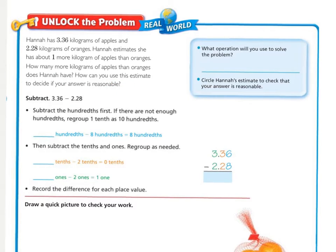Press pause and squiggle underline what you are being asked to find. Circle the important numbers and then underline any clue words that tell you what operation you will be doing.